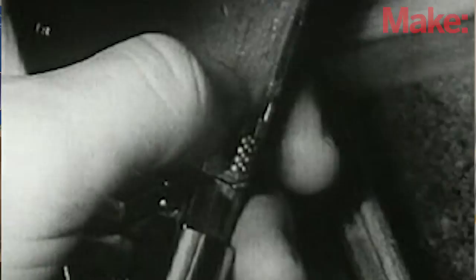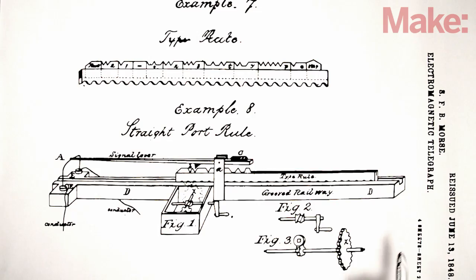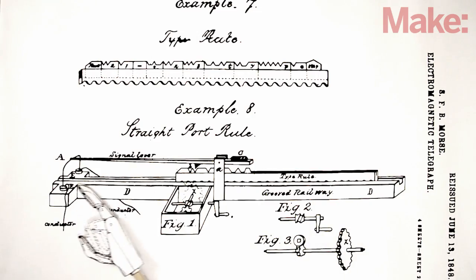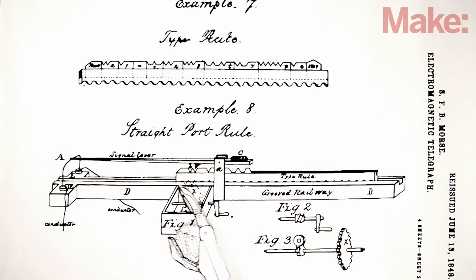Despite those flaws, it's an interesting device that predicts an age of automation. Operators didn't have to learn Morse code. Instead, they use a process similar to typesetting, where they compose words from premade letters. The messages are then fed through the machine, where they're converted into electrical signals and transmitted.